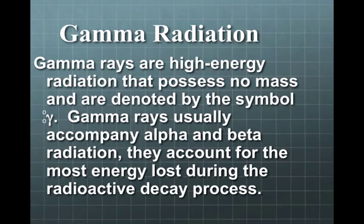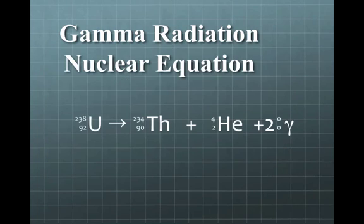The third and final type of radiation that I want to talk about in this chapter are gamma rays. Gamma rays are very high-energy radiation that typically has no mass, no charge, and they're typically associated with a helium nucleus and a beta particle. They are just a high-energy form of radiation. They account for the energy that is lost during radioactive decay.